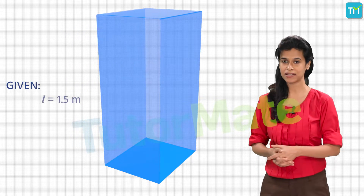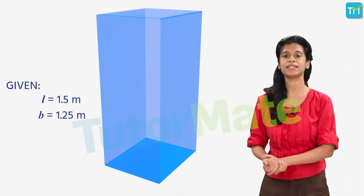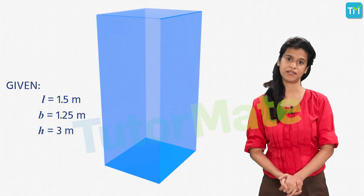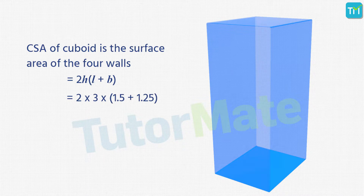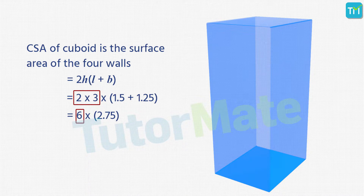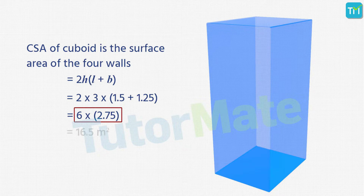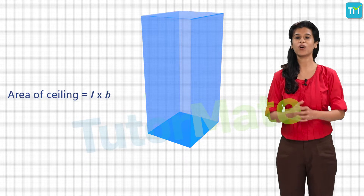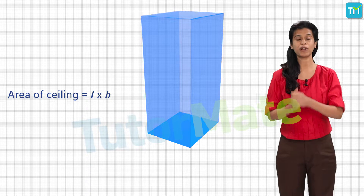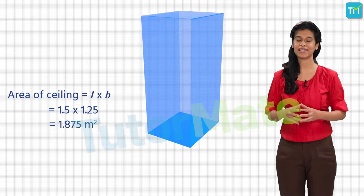We have L = 1.5 meters, B = 1.25 meters, and H = 3 meters. The curved surface area — the area of the 4 walls — is calculated as 2H × (L + B). Substituting the values: CSA = 2 × 3 × (1.5 + 1.25) = 6 × 2.75 = 16.5 square meters. Next, the area of the ceiling is L × B = 1.5 × 1.25 = 1.875 square meters.